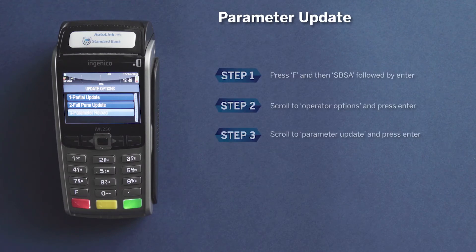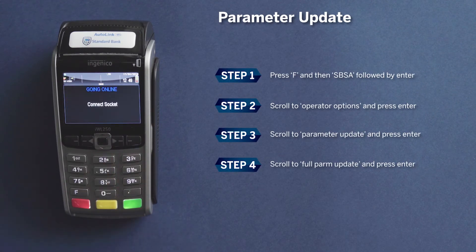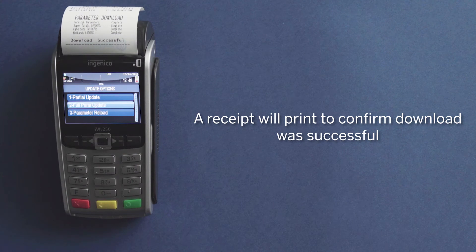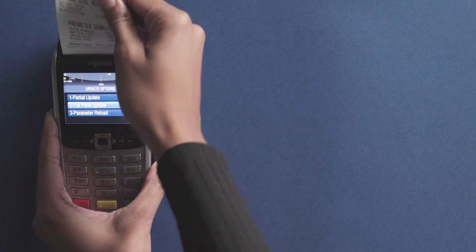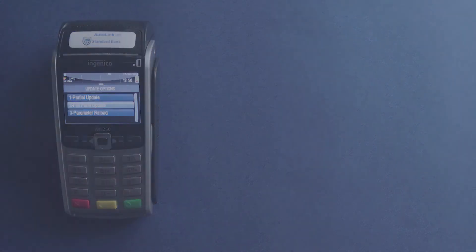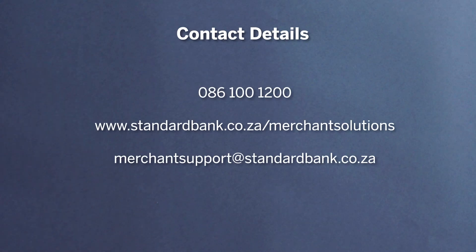For the purpose of this video, we will download a full parameter update. Select and wait. This can take a few moments. Once the download is complete, the AutoLink device will print a receipt to confirm a successful download. Your AutoLink device is now up to date.